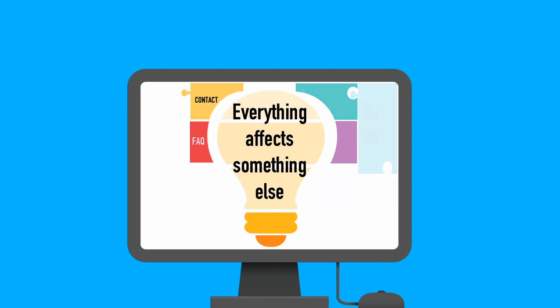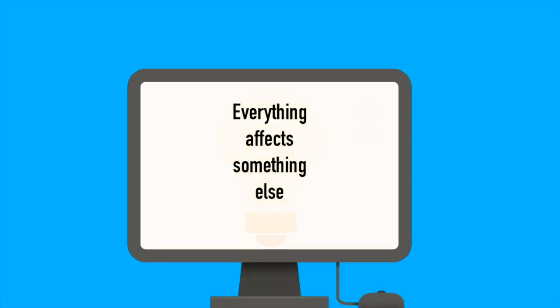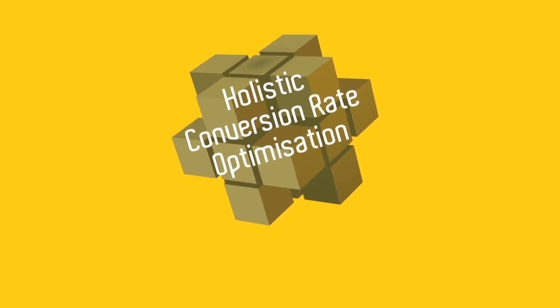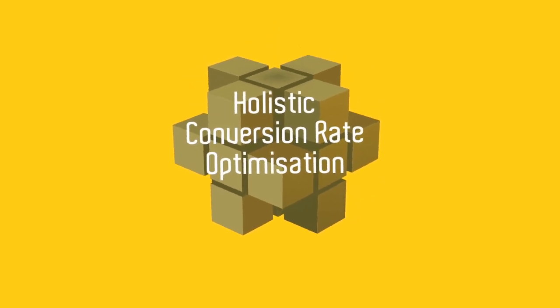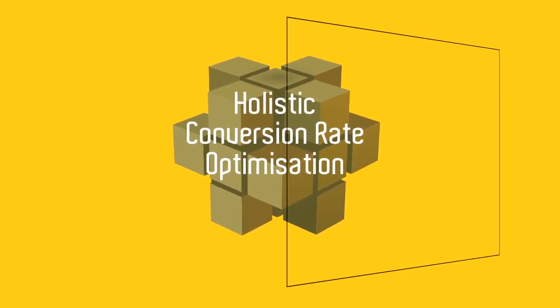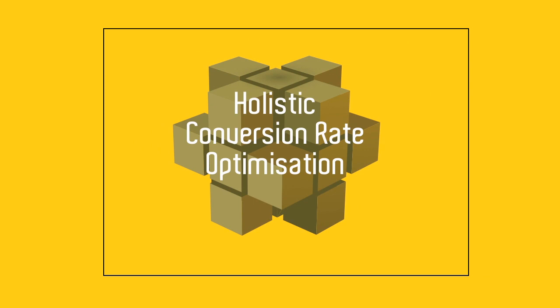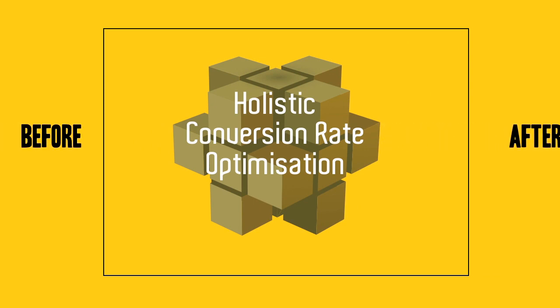When we tinker with one part, are we able to understand the impact it might have on other parts? Rabin suggests not. Holistic Conversion Rate Optimization, or HCRO, considers this ecosystem. While you might look at individual pages and metrics, HCRO considers the big picture.